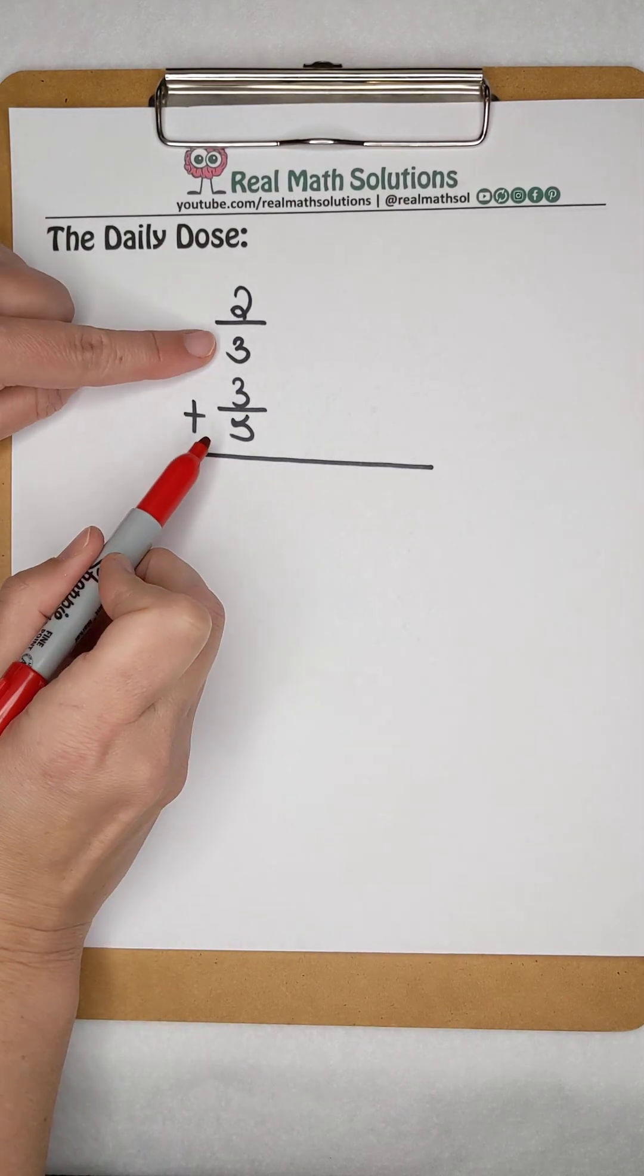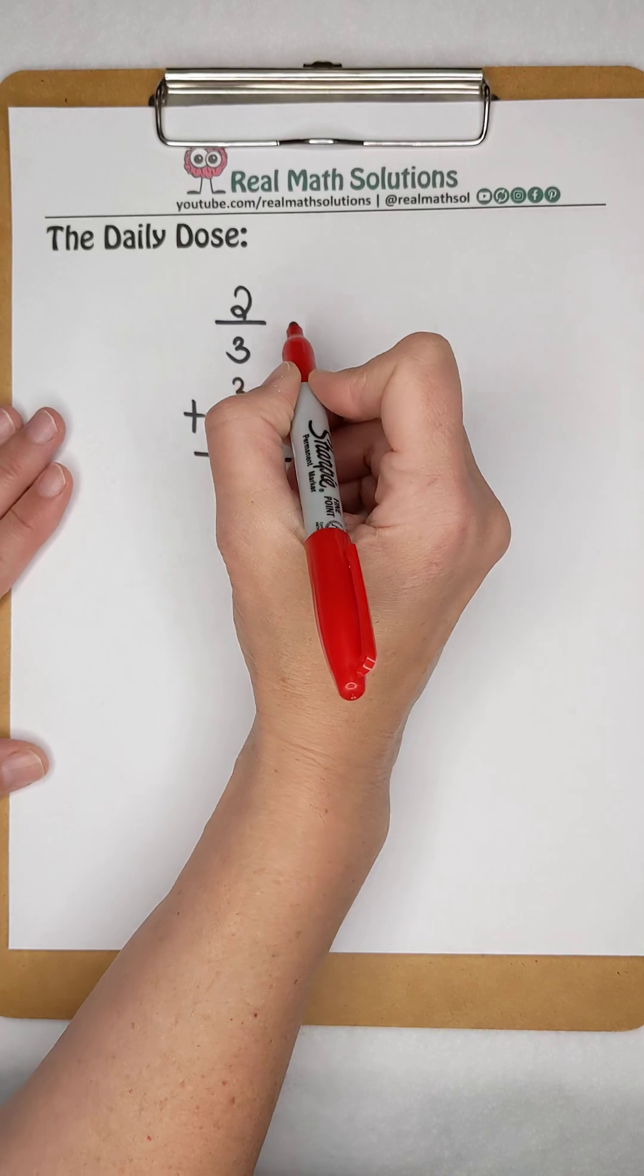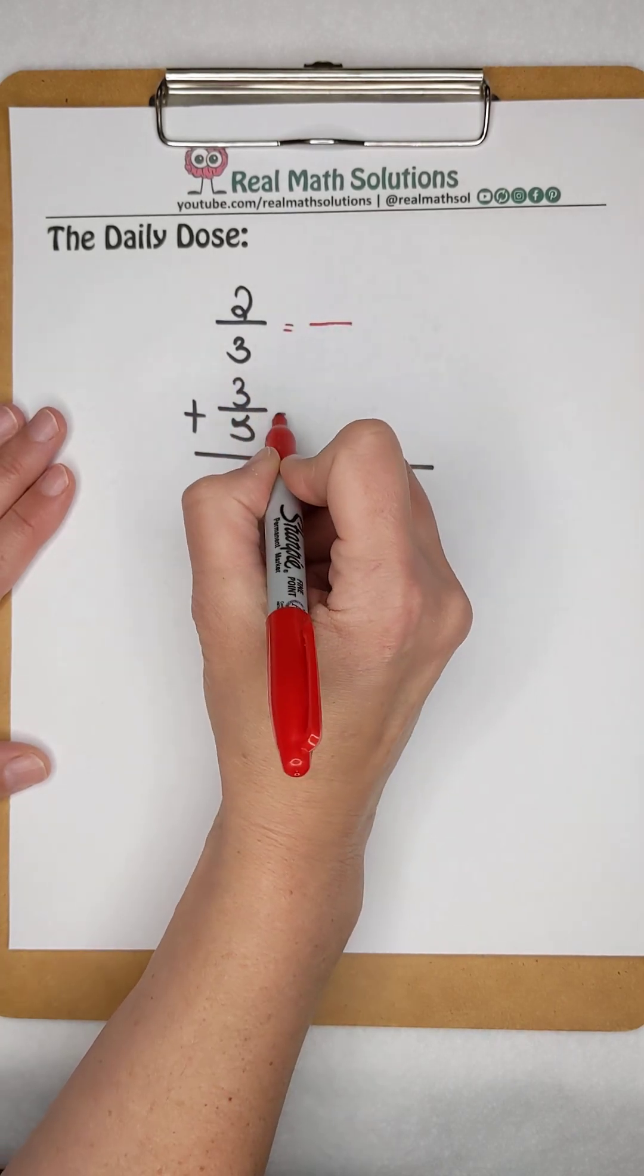When we add fractions, the first thing we need to do is check to make sure we have a common denominator. Since we don't have common denominators here, we know we're going to have to make equivalent fractions.